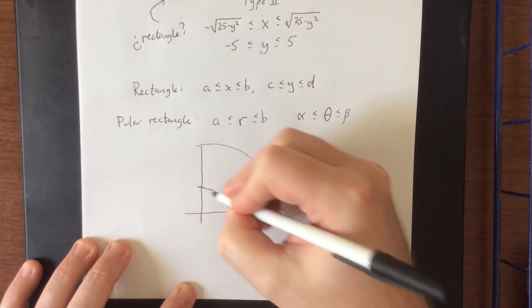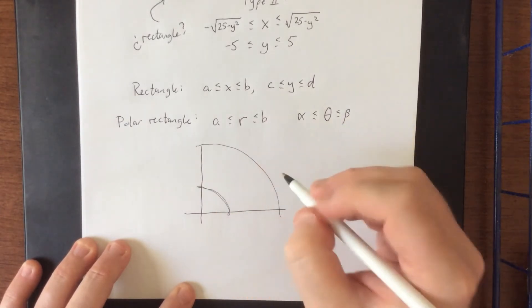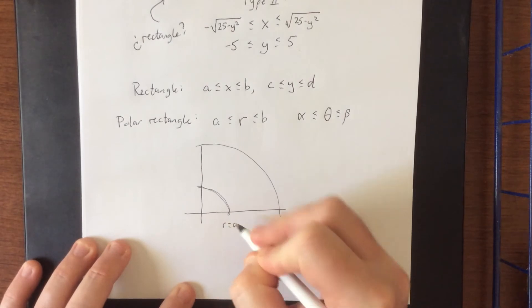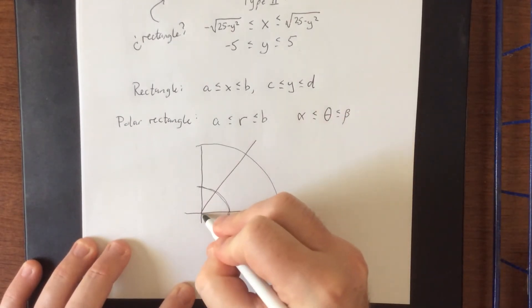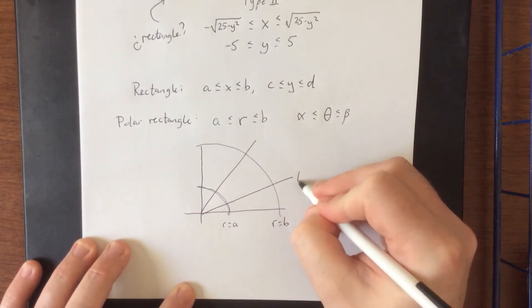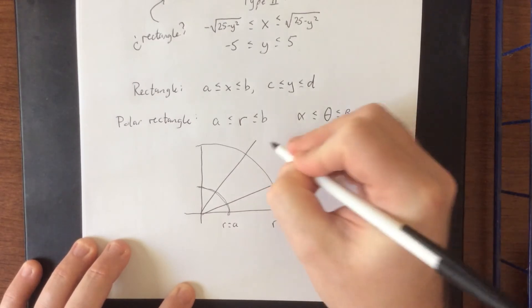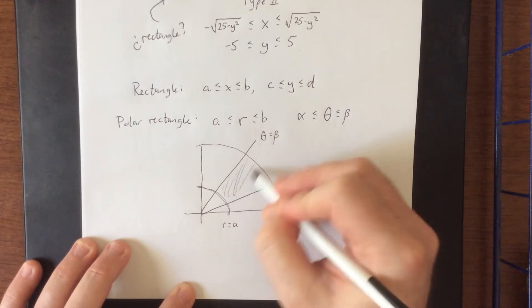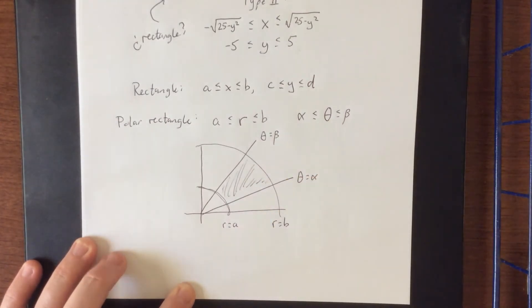Now, these are supposed to be circular in nature, I'm just not a powerful drawer. So we'll say that this is r equals b, and this is r equals a. And we have two angles as well. We'll say that this is theta is equal to alpha. We'll say that this is theta is equal to beta. So the polar rectangle in question would be this region right here.